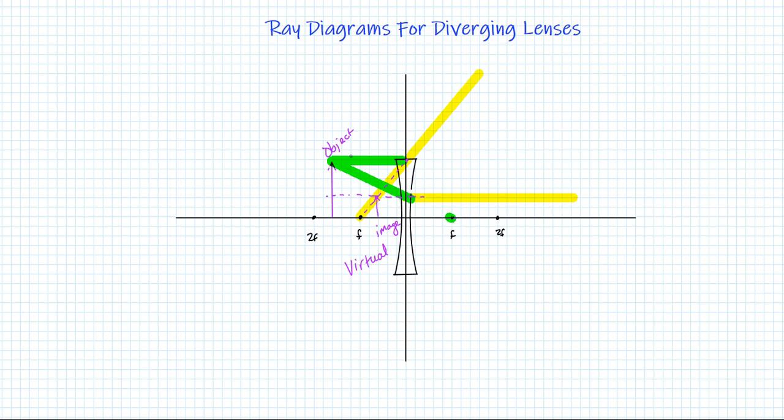Now I don't have to draw a whole variation of different object locations. With a converging lens we saw that depending on where you place the object within the focal length on the focal point between f and 2f or beyond both it changed the kind of image that formed.